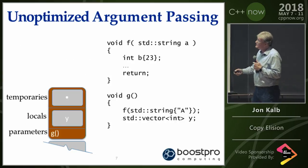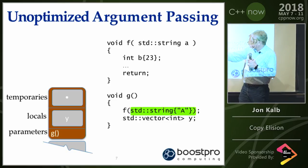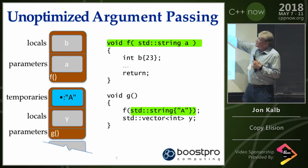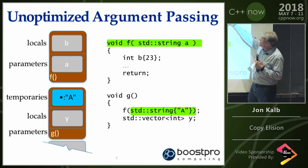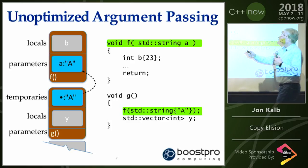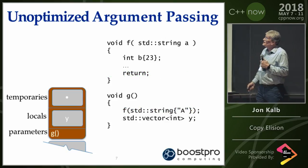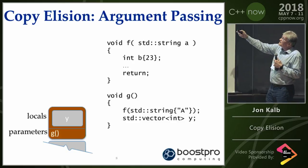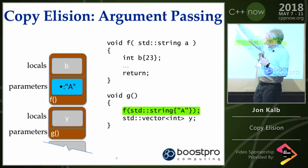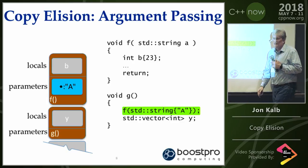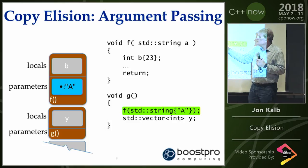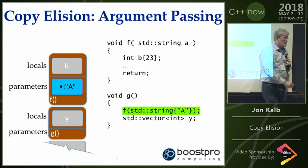Copy elision is essentially the same thing except done with parameters. G is calling F and passing in a temporary. Here's our temporary — it doesn't have a name, it's just a big dot. Now we call into F. F has a local B and the passed-in parameter A. What's happening is we're going to copy A from the stack frame of G into the stack frame of F. But no compiler writer would ever write that. Instead, they write the copy elision version: G doesn't create any space for its temporary — it goes ahead and creates the temporary right in the stack frame for F rather than doing the copy. Notice this won't work if we need to have this value afterwards, which is why it works with temporaries. If this was an L-value, we would need it later and couldn't just create it in the space for the function we're calling.